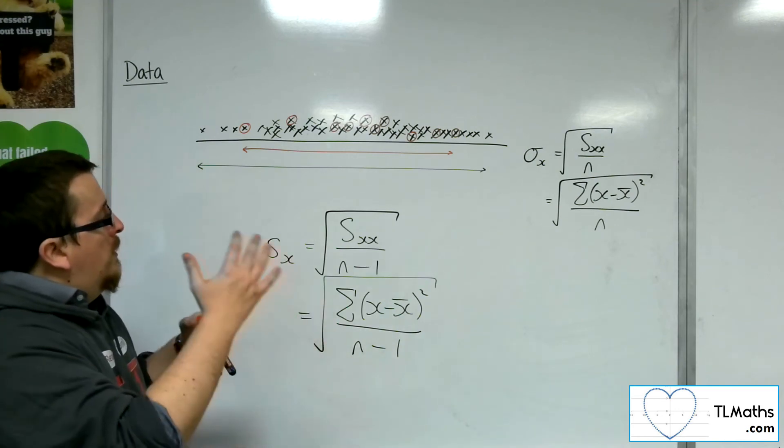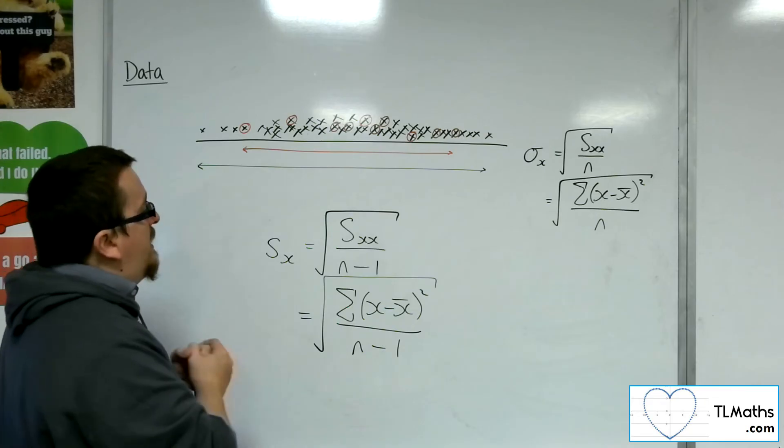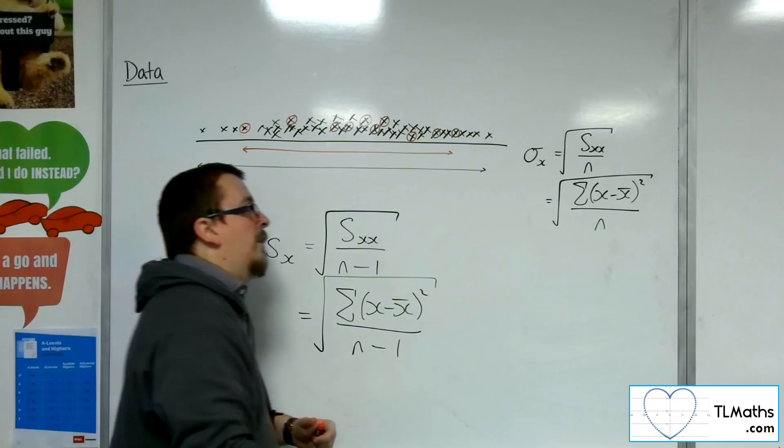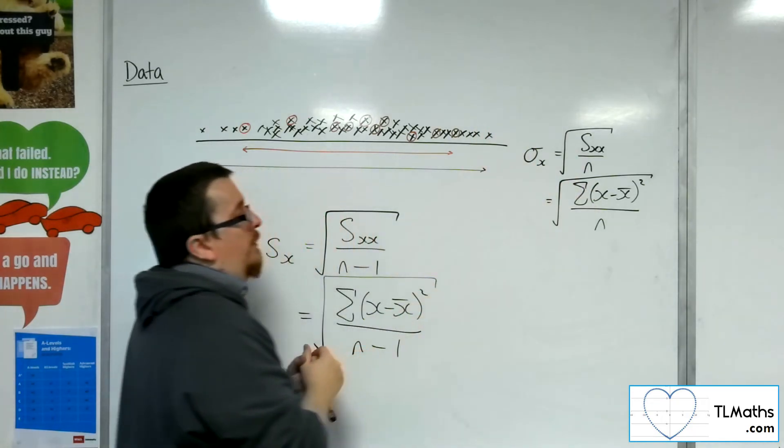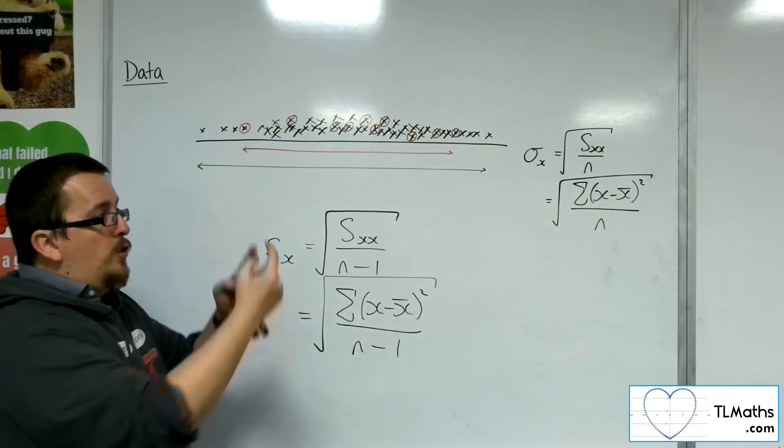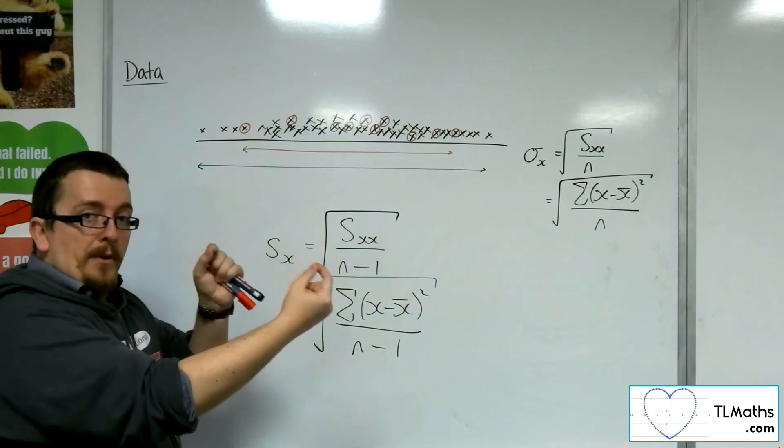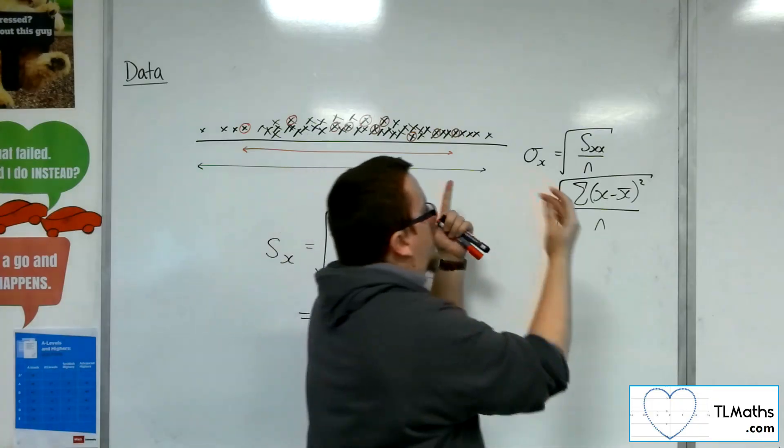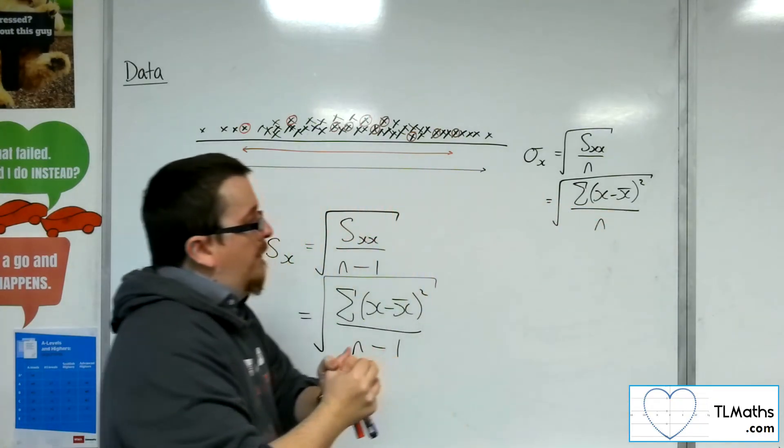So, this sample standard deviation divides by n minus 1, whereas the population standard deviation, so if you're just looking at a population of numbers, of distinct numbers that are my sample, then it's just divided by n.